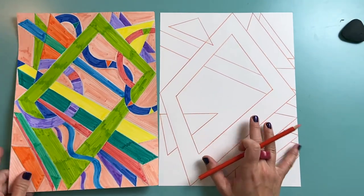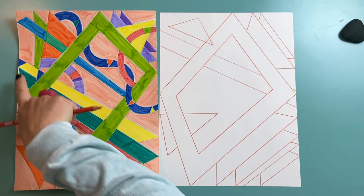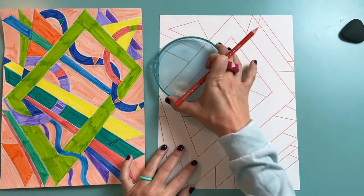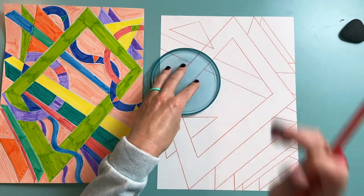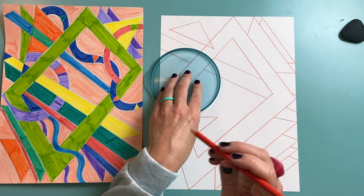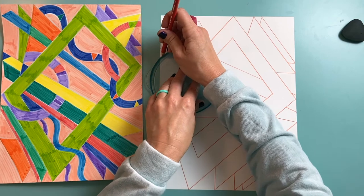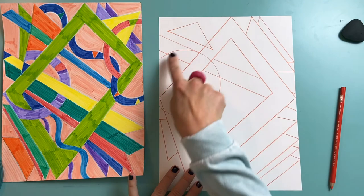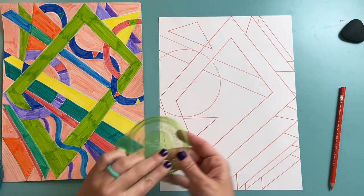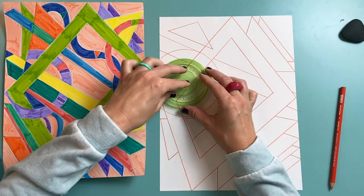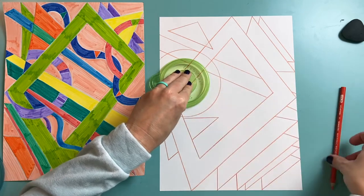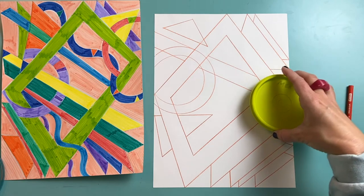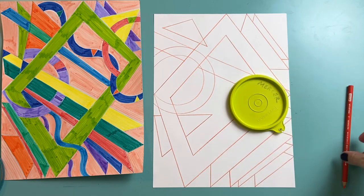We also might want to add some circles in our composition also. So I just found some random lids. And let's see, I think this might be a good spot for a circle. So I'm going to draw my circle. And that's the outside of my circle. And I can use a smaller lid for the inside of my circle. Go ahead and add circles wherever you want.